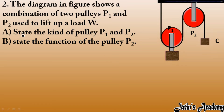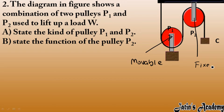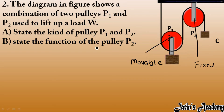P1 is a movable pulley (single movable pulley) and P2 is a fixed pulley (single fixed pulley). The function of P2: it is changing the direction of effort from upward to downward. Without this pulley we would have to apply force in the upward direction, but due to P2 we can apply force in the downward direction — a more convenient direction.